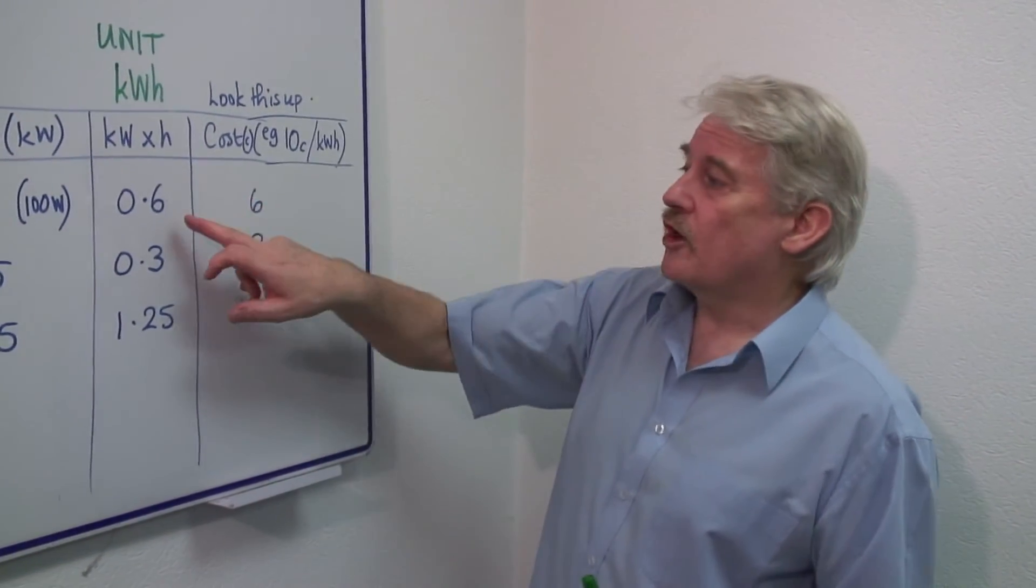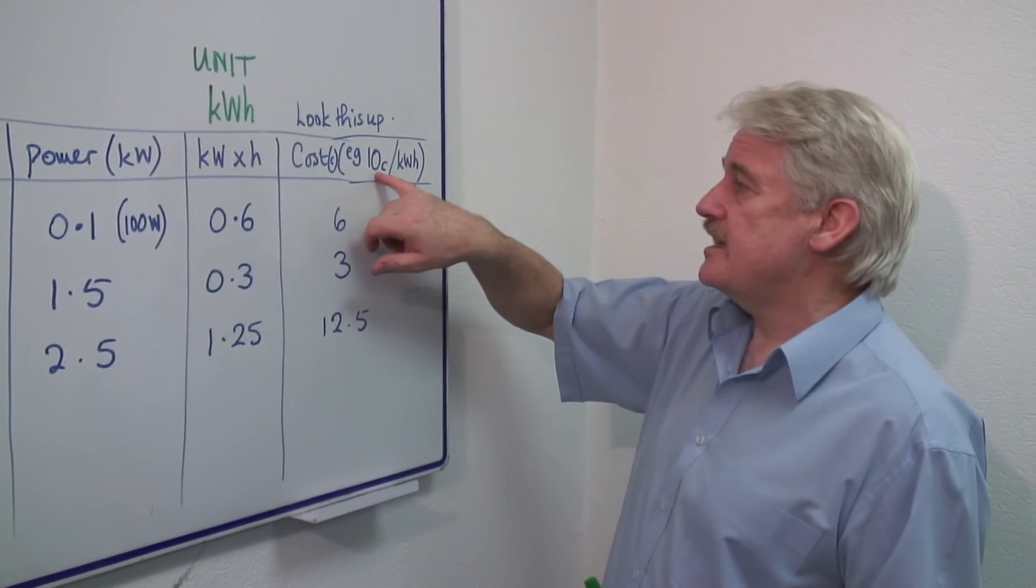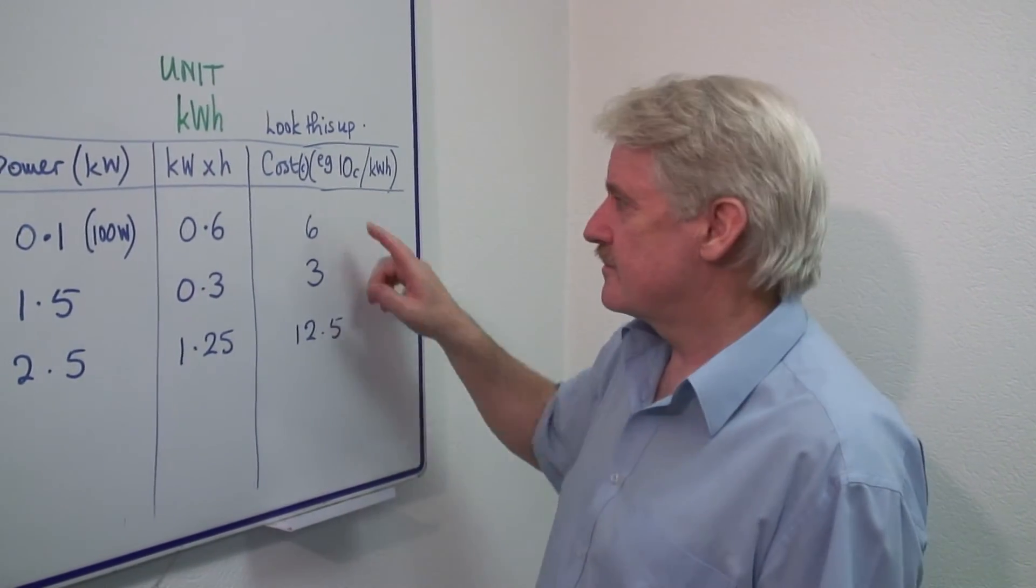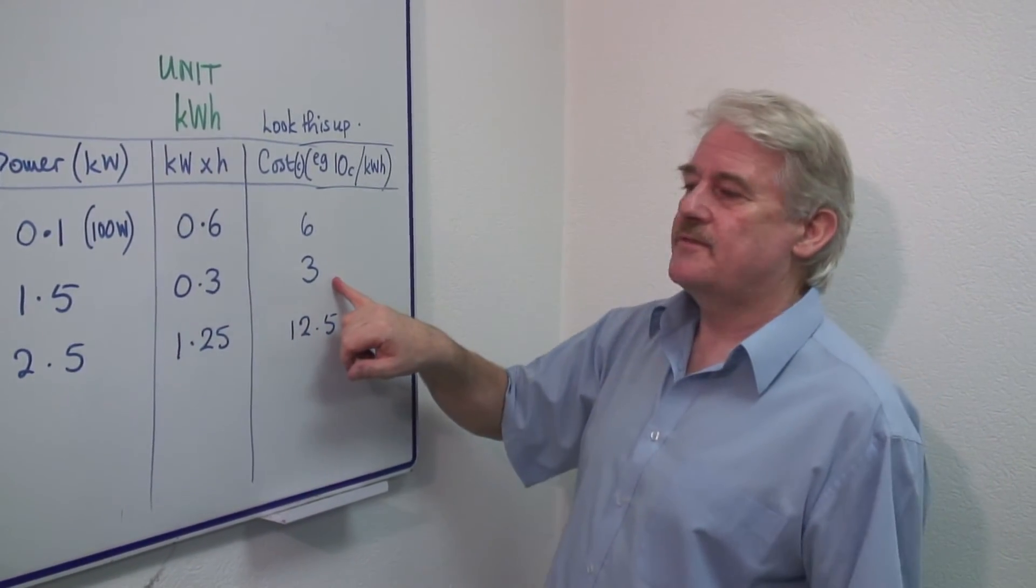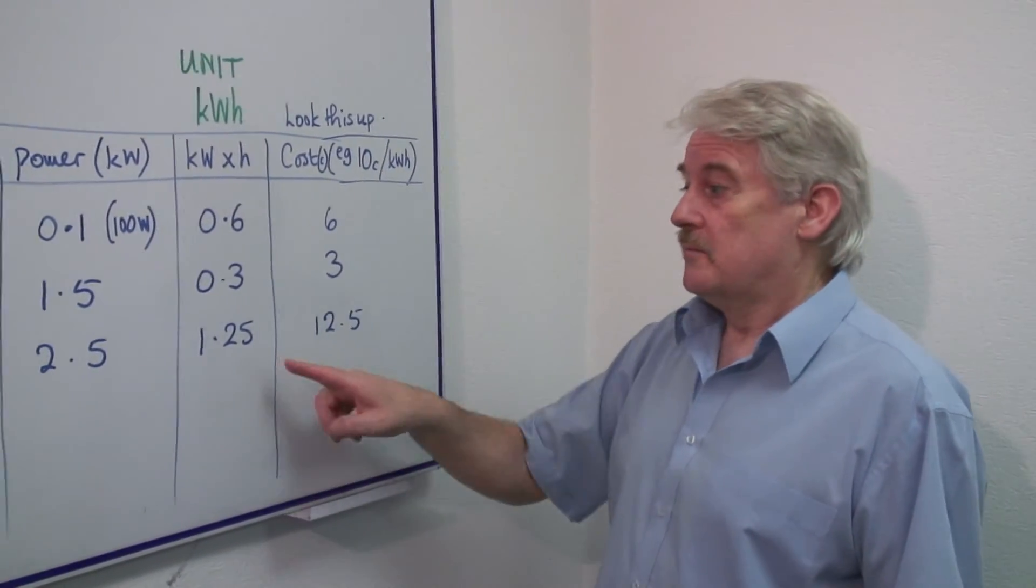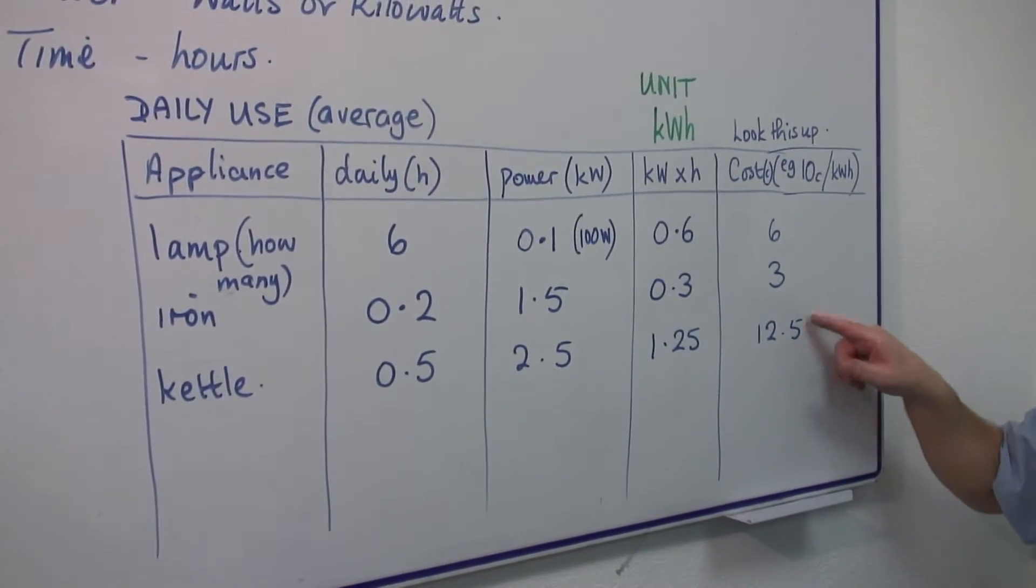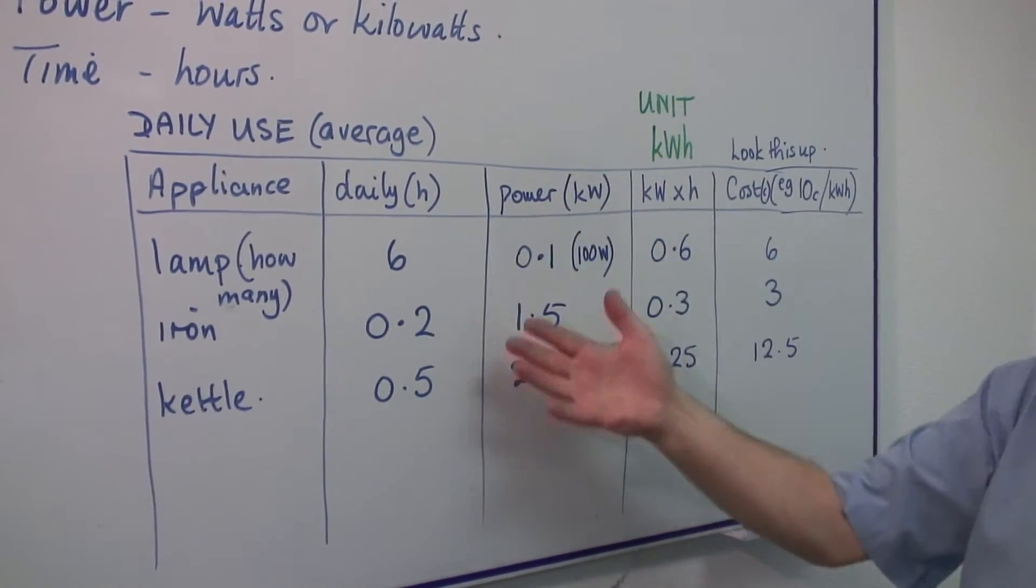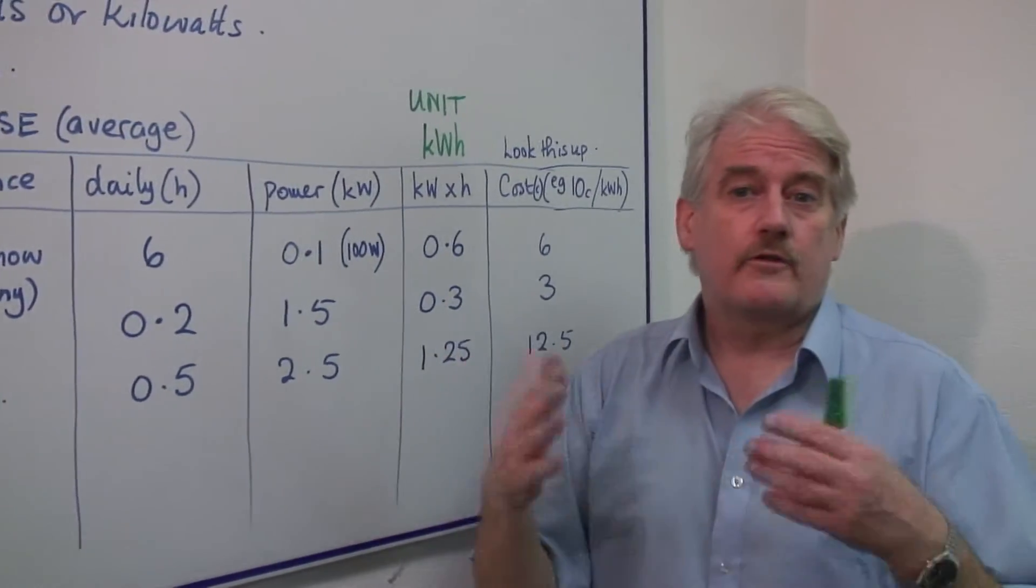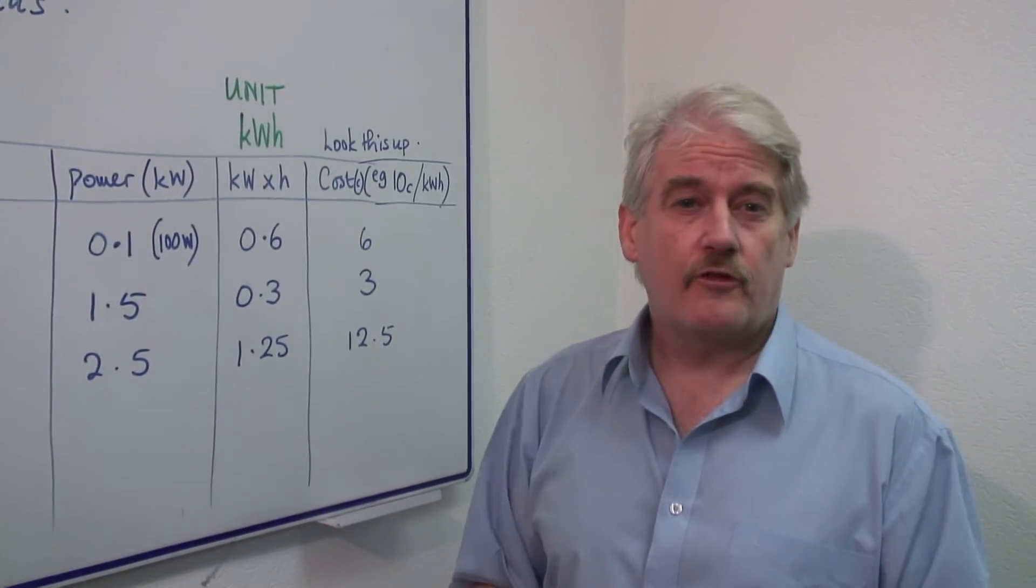So if we've got 0.6 kilowatt hours and each one costs 10 cents, we're only paying 6 cents for the light. We're paying even less for the iron because we don't use it a lot, 3 cents. The kettle, bit more expensive, 12.5 cents for the kettle. So this would be a daily average. You could do if you want over a month and estimate the hours over a month and work out your monthly bill.